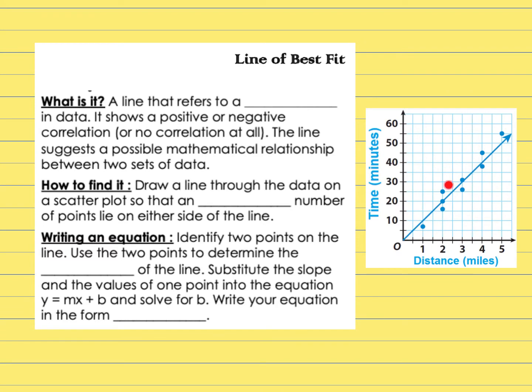Here's a picture of a scatter plot. We're going to go over a line of best fit. It says basically what is a line of best fit. It's a line that refers to a trend in the data. It shows a positive or a negative correlation or sometimes there's no correlation at all in scatter plots. The line suggests a possible mathematical relationship between the two sets of data. So how is x and y related is basically what we're looking at.